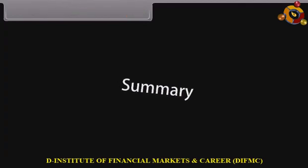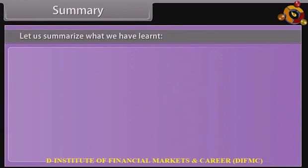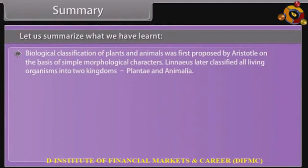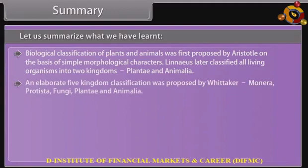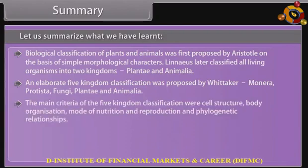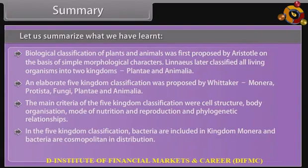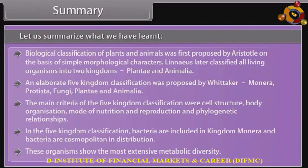Summary: Biological classification of plants and animals was first proposed by Aristotle on the basis of simple morphological characters. Linnaeus later classified all living organisms into two kingdoms — Plantae and Animalia. An elaborate five-kingdom classification was proposed by Whittaker: Monera, Protista, Fungi, Plantae, and Animalia. The main criteria of the five-kingdom classification were cell structure, body organization, mode of nutrition and reproduction, and phylogenetic relationships. In the five-kingdom classification, bacteria are included in Kingdom Monera and are cosmopolitan in distribution. These organisms show the most extensive metabolic diversity.